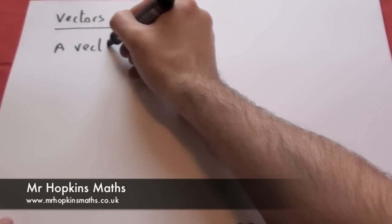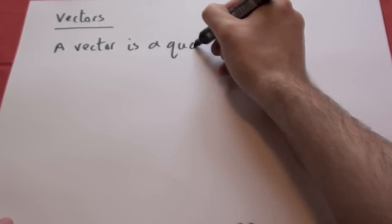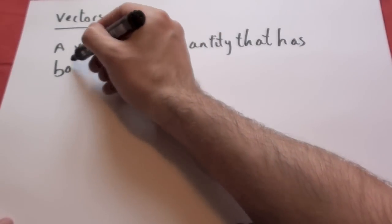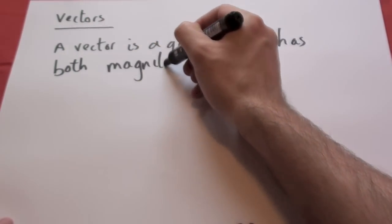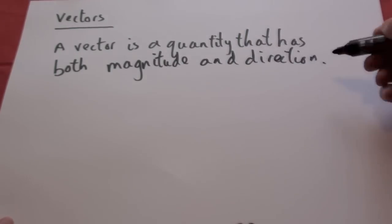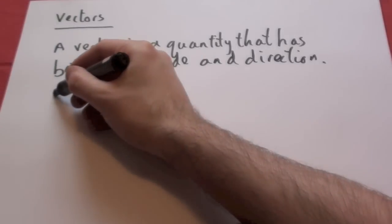Today we're going to be looking at the subject of vectors. A vector is a quantity that has a direction and magnitude, so it shows how far something is and where it's going to be.